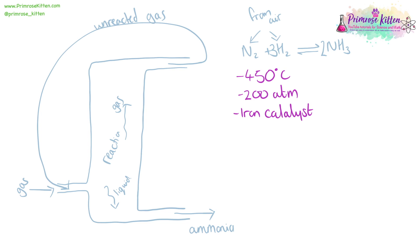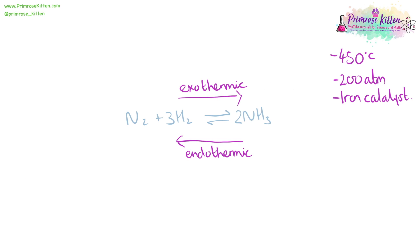The production of ammonia is very important because it is an important source of nitrogen for fertilizers. The conditions used in the Haber process are actually a compromise.